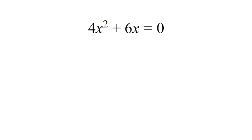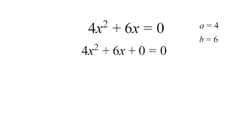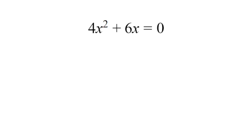Moving on to Example 3: 4x squared plus 6x equals zero. We have two terms but not the third — an ax squared term and a bx term but no c term. We can rewrite this as 4x squared plus 6x plus 0 equals zero. So a equals 4, b equals 6, and c equals 0. Instead of FOILing, we're going to use a different method — relying on the GCF, the greatest common factor: the largest number that can multiply into all terms.